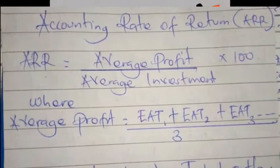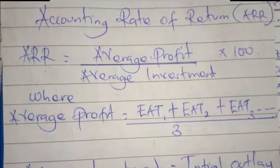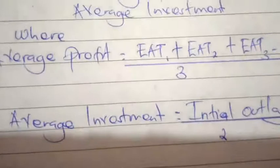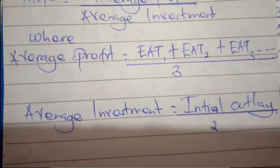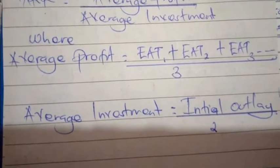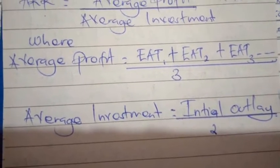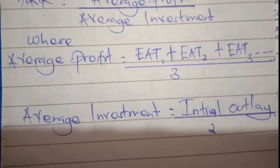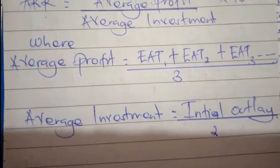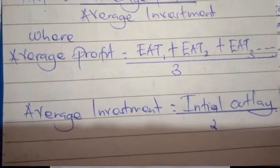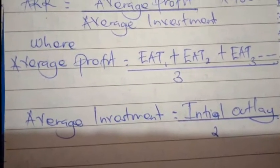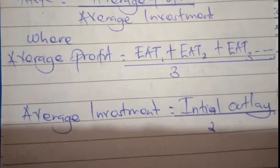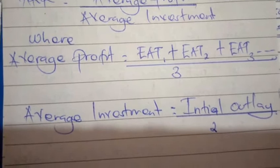We get the formula for ARR from its definition: ARR equals average profits divided by average investment, times one hundred. Average profits are calculated by adding all earnings after tax for all the years, then dividing by the number of years. Average investment is calculated by dividing the initial outlay by two.